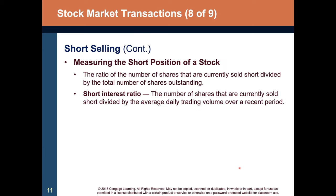We can measure the short position of a stock in two ways. First, the ratio of shares currently sold short divided by total shares outstanding — indicating consensus about whether a stock is likely to drop. Second, the short interest ratio: shares currently sold short divided by average daily trading volume over a recent period, indicating how many days of normal trading are represented by the short position.